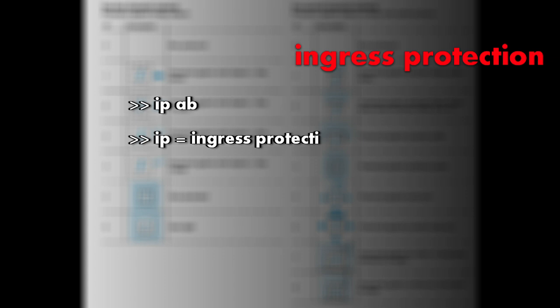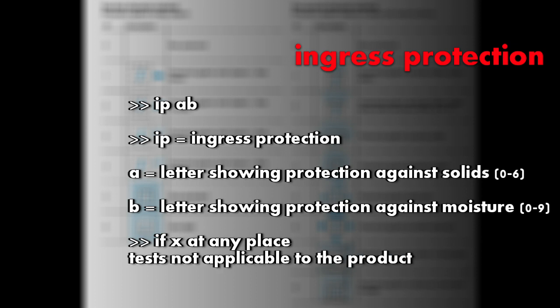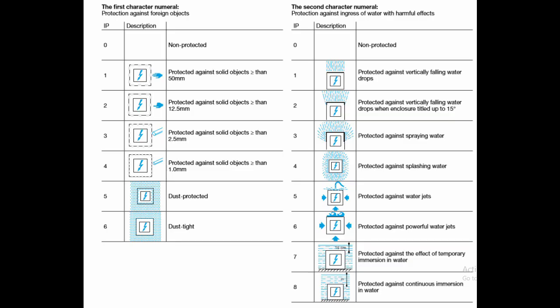Next comes the IP, ingress protection. In IP, we have generally two letters following IP. The first character numeral tells us about protection against foreign objects or solid foreign objects while the second character numeral tells us about protection against ingress of water with harmful effects or any kind of moisture. If there is X written either in the first place or second place, it signifies that the tests are not applicable to the product. If it is 0, the product is non-protected.